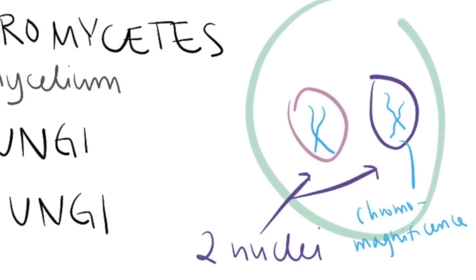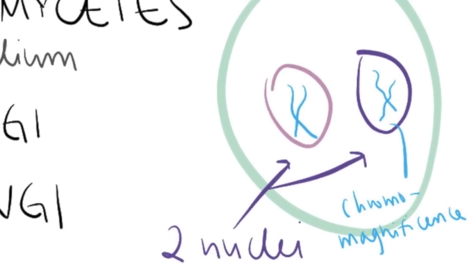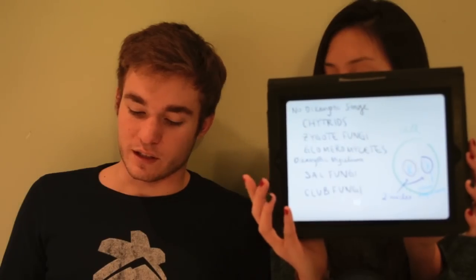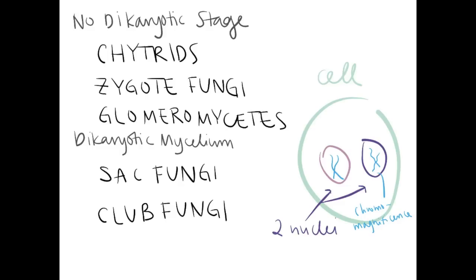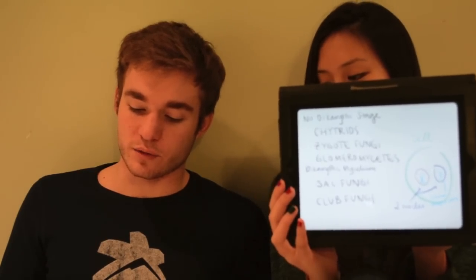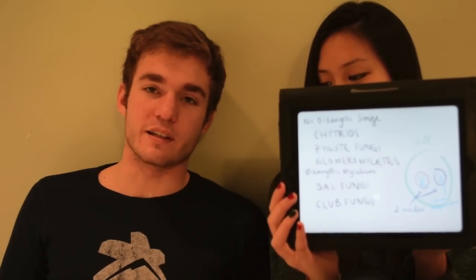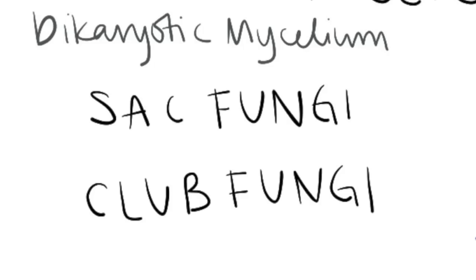This is Introduction to Fungi. There are five major groups of fungi, and they're separated between the groups that have a dicariotic stage and those that do not. There are the chytrids, the zygote fungi, and the glomeromycetes. The fungi that do not have a dicariotic stage are the sac fungi and the club fungi.